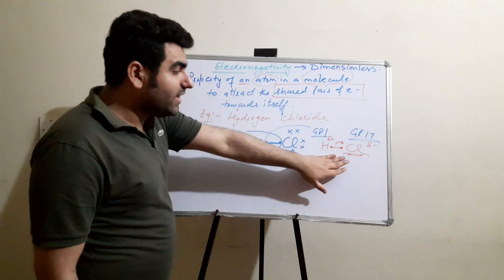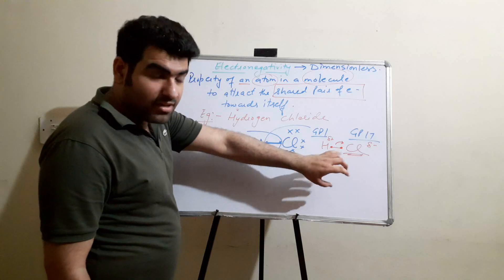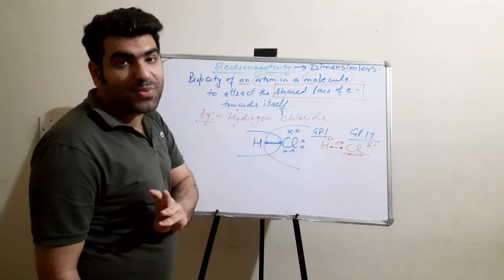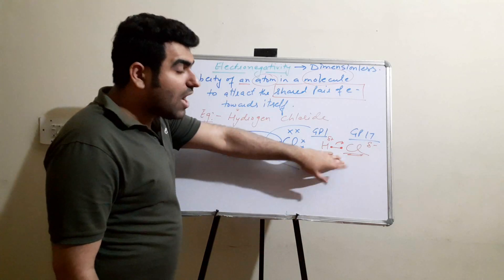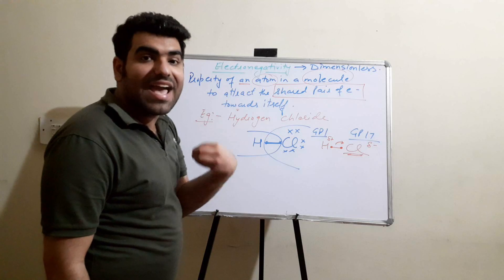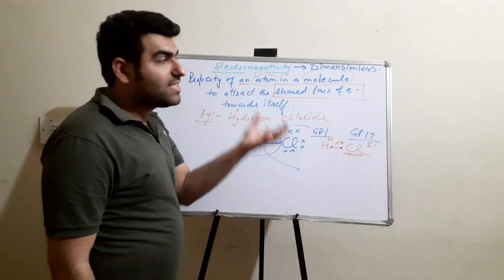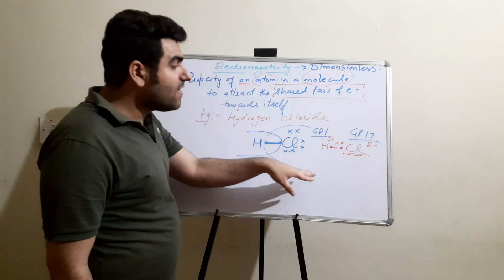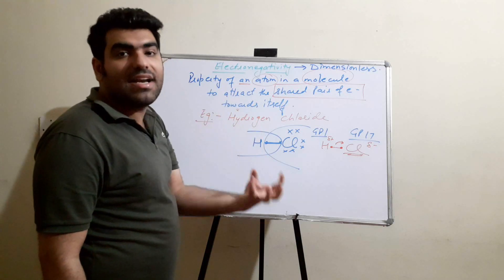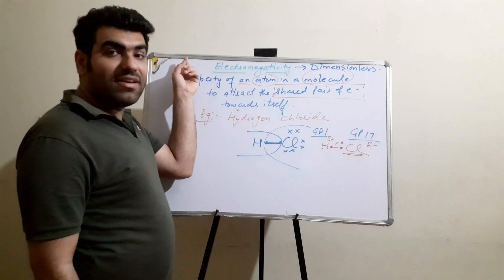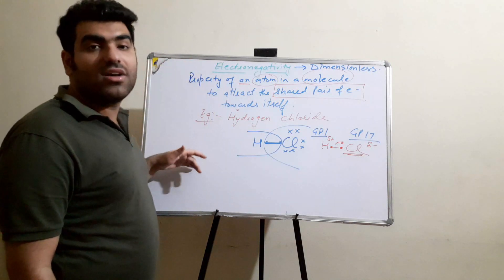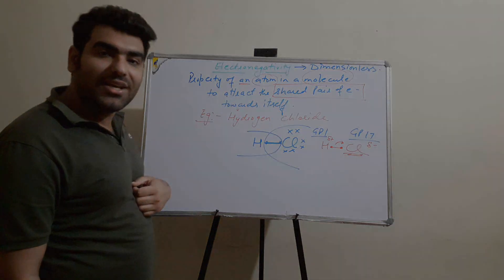The factors that determine electronegativity are nuclear charge and atomic size. Out of two atoms, the one with lesser atomic size and greater nuclear charge will be more electronegative, while the one with greater atomic size and lesser nuclear charge will be less electronegative. Now we will discuss its trend along the period as well as down the group.